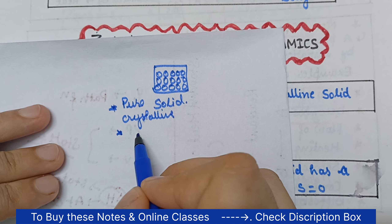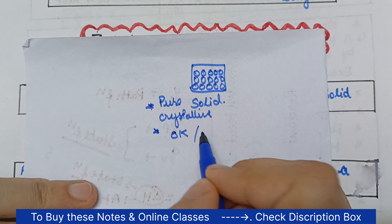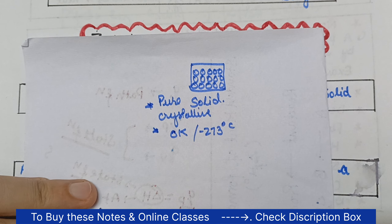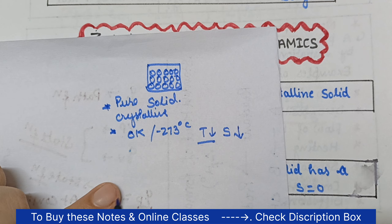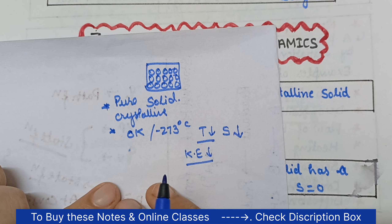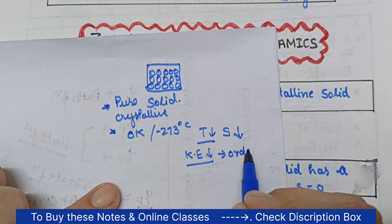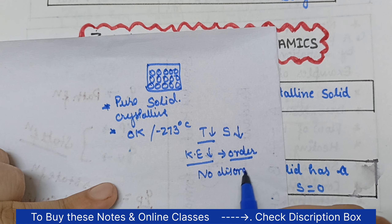And if the temperature is absolute zero — zero Kelvin, or minus 273 degrees Celsius — then if we apply these two conditions, the temperature is decreasing. We know that when we decrease the temperature, entropy will also decrease. As you decrease the temperature, the average kinetic energy of the particles also decreases, so there will not be much motion. There is order, a lot of order, and no disorder. If disorder is less, entropy will also be less, and it is so little that entropy becomes zero.